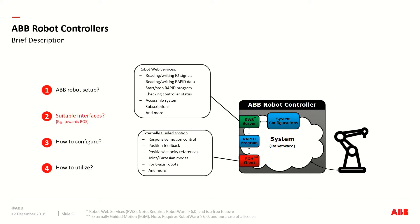The other interface is called External Guided Motion, or EGM for short. It's much more specialized communication — you can use it to stream motion references to the robot controller to control motion in joint space or Cartesian space. It's only for 6-axis robots and requires RobotWare 6 or newer, as well as the purchase of a special license. I always find Robot Web Services useful, and EGM depends on whether there's a need for responsive motion control.